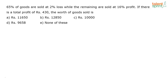65% of the goods are sold at 2% loss while the remaining are sold at 16% profit. If there is a total profit of rupees 430, the worth of the goods sold is — let's see the best way to approach this question.